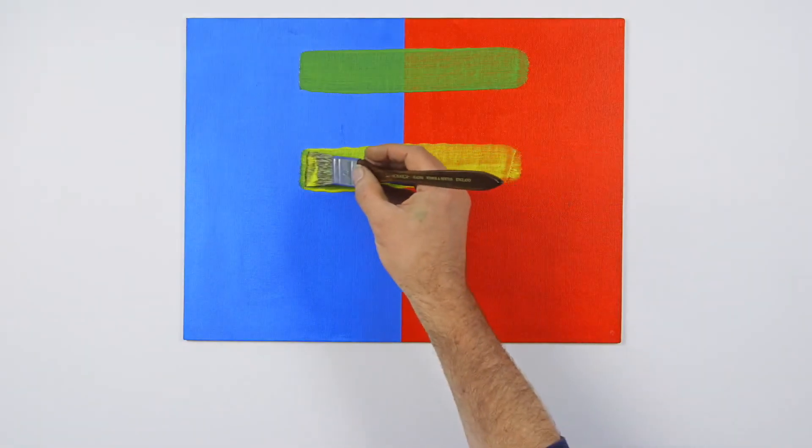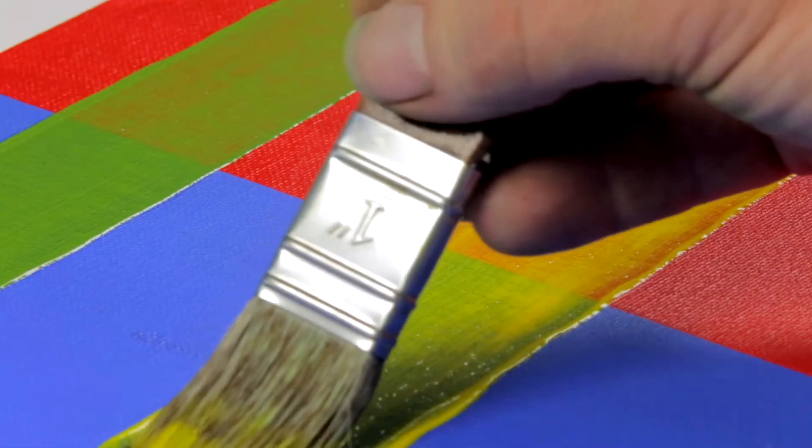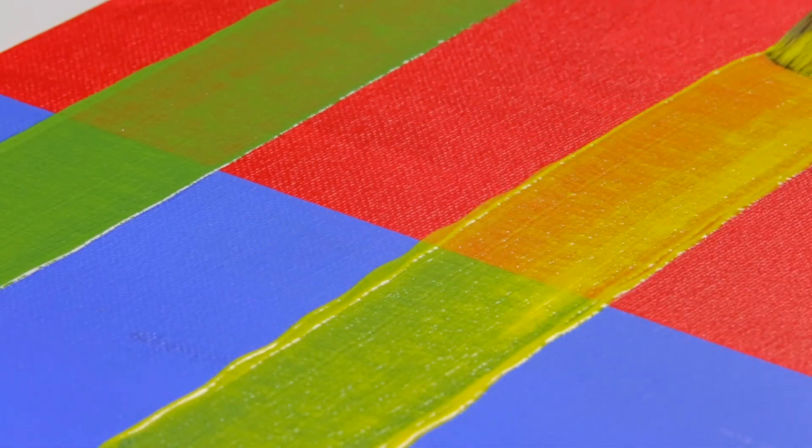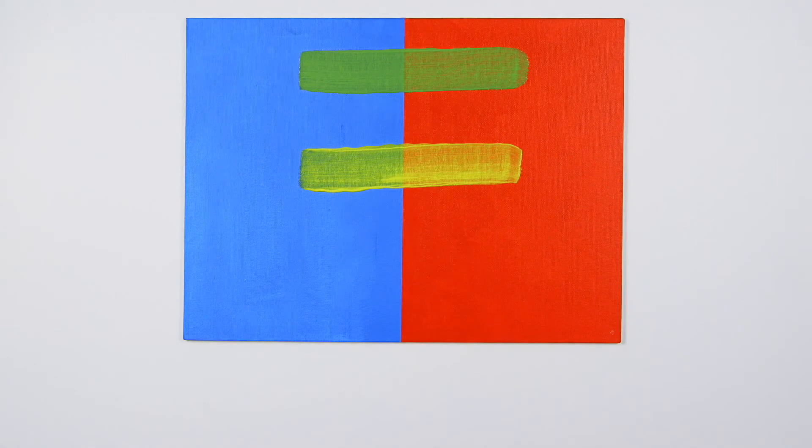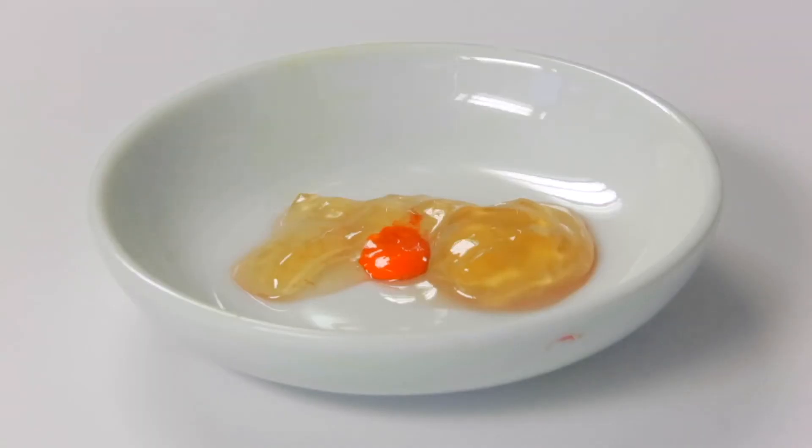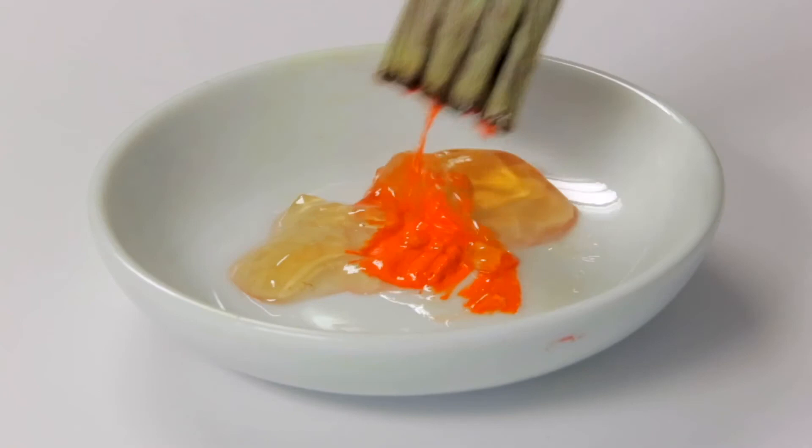Perhaps the element of surprise when putting one colour over another is also an advantage when experimenting. These scumbles seem really charged up by their underlying colour. One disadvantage with optical mixing is that it does rely on the underlayer being dry before another can be put on top.